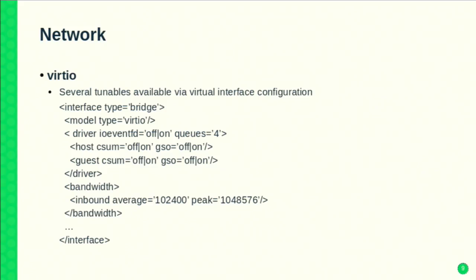The virtio-net device has quite a few tunables. One interesting one is ioeventfd, which is off by default. If you turn this on, it enables another thread in QEMU to handle IO events, which can reduce steal time and spinlock contention in the VM. So if your VM is experiencing high CPU utilization during IO, enabling ioeventfd can help.